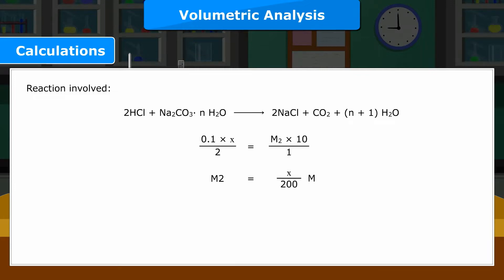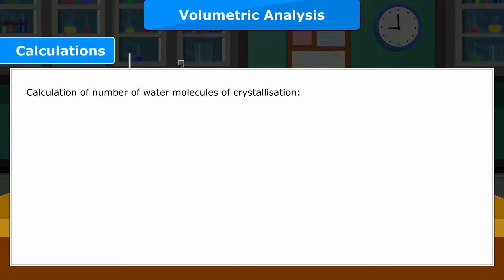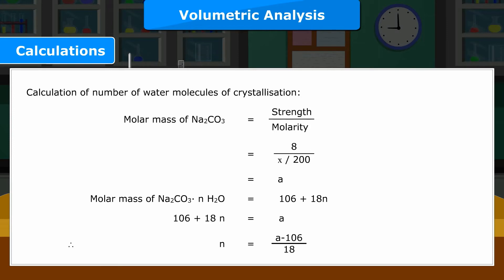Calculation of number of water molecules of crystallization: Molar mass of Na2CO3 is equal to strength upon molarity, which is equal to 8 upon X by 200, which equals A. Molar mass of Na2CO3·nH2O is equal to 106 plus 18N. Therefore 106 plus 18N equals A, so N is equal to A minus 106 upon 18.